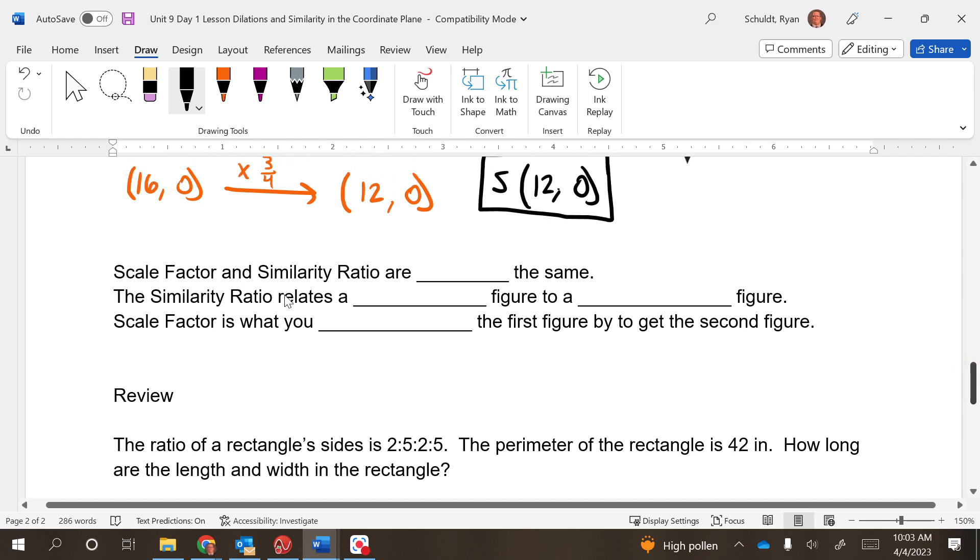Scale factor and similarity ratio—we learned similarity ratio in unit 6—these are not the same. The similarity ratio relates a first figure to a second figure. A scale factor is what we multiply the first figure by to get the second figure. So they're not the same. Similarity ratio relates first to second, scale factor is what we actually multiply by.